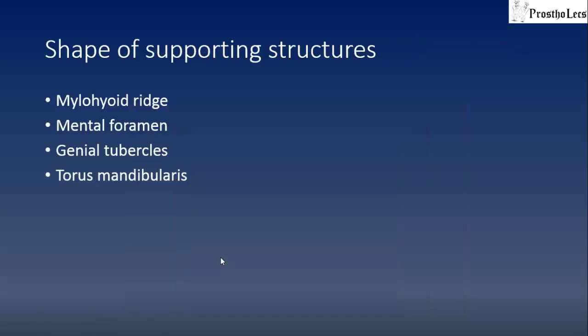Shape of the supporting structures: some anatomic variations also affect the shape of the supporting structures. These include the mylohyoid ridge, mental foramen, genial tubercles, and torus mandibularis — all of which can significantly affect the shape of the supporting structures.